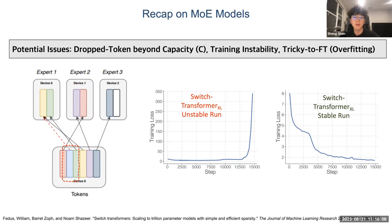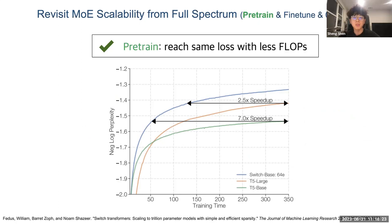Following this background, we want to see if Mixture of Experts models can actually be scalable — when we add more compute, can they consistently achieve better performance across the full spectrum of pre-training, fine-tuning, and few- or zero-shot adaptation? As shown here, MoE models usually give much better pre-training performance: a Switch-based model reaches the same performance as its dense counterpart with 7x speedup, and even matches a larger dense model with 2x speedup. But this improvement in loss may not directly translate to downstream adaptation performance.